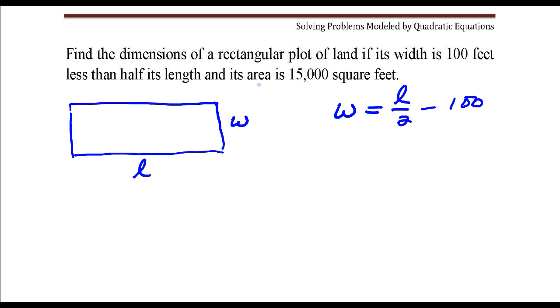And also the area is 15,000 square feet. Now the formula for the area of a rectangle is length times width. So length times width is 15,000.